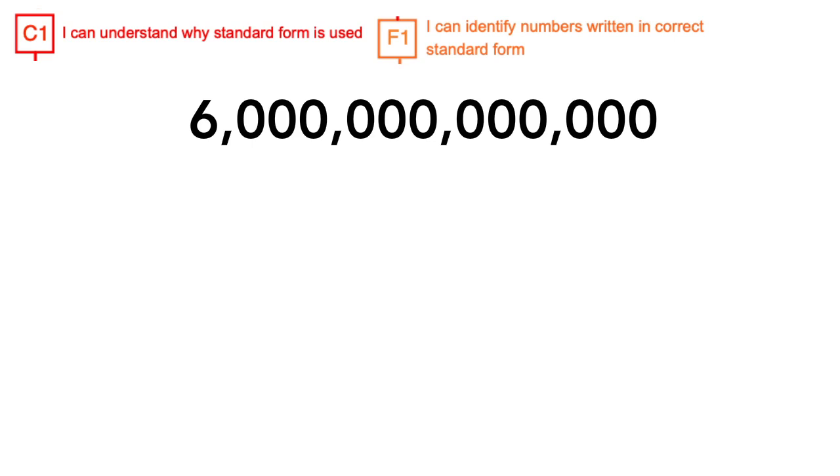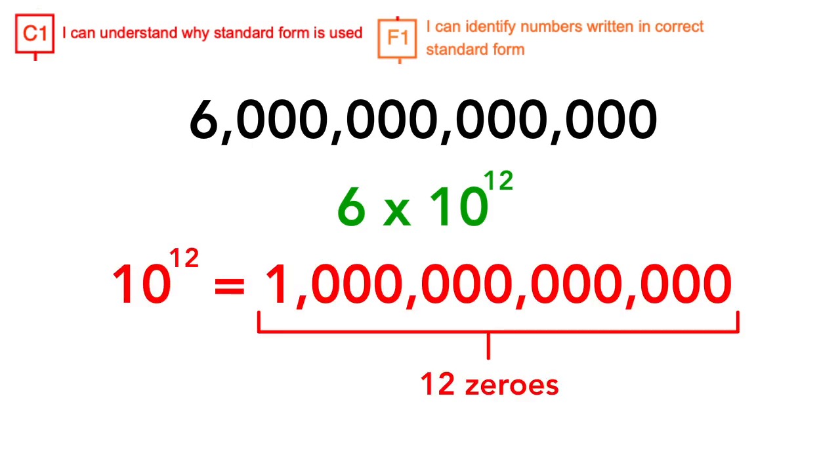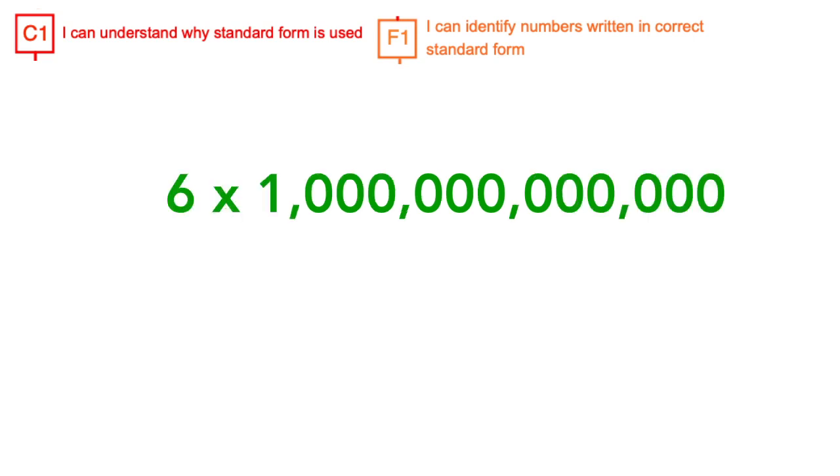6 trillion in standard form is 6 times by 10 to the power of 12. Like in the previous video, we know that 10 to the power of 12 is equal to 1 trillion. So 6 times by 1 trillion is 6 trillion.